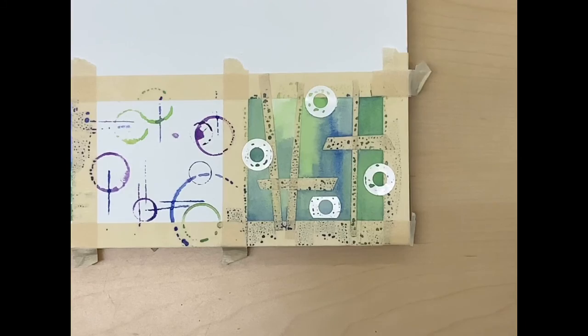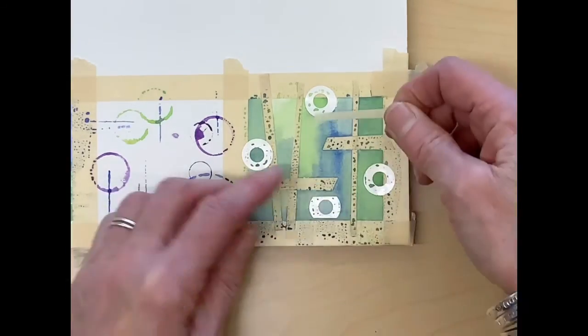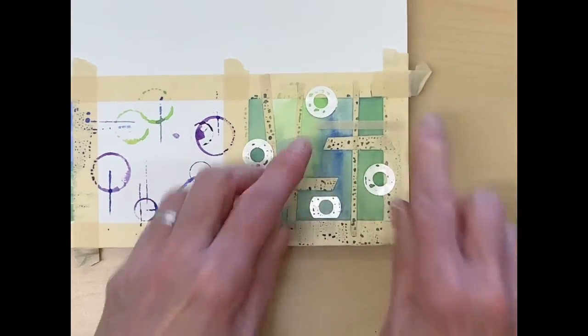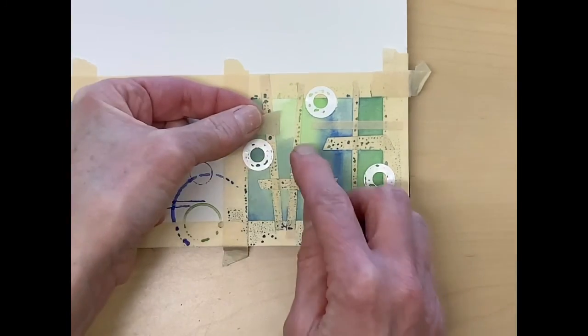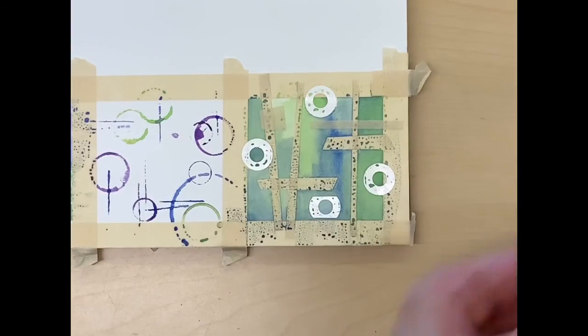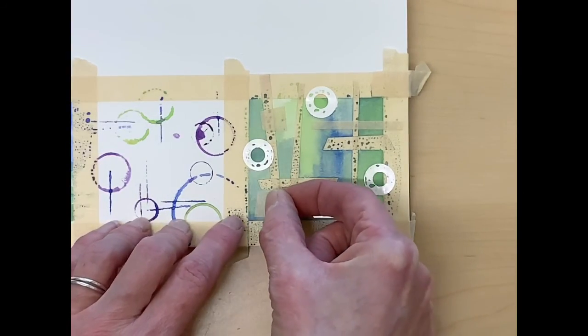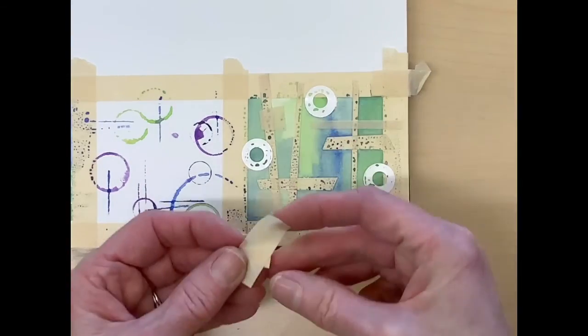All right, so this is pretty dry, so now I'm going to do my second layer. I'm going to leave that tape on and the hole reinforcers and do a second layer of tape. You can do three layers if you'd like, you can do a bunch of layers, but for this we'll just do two. Just remember to let it dry in between.